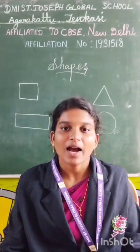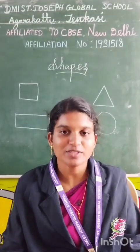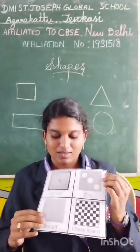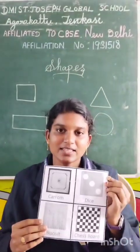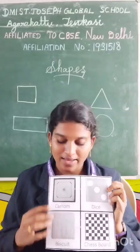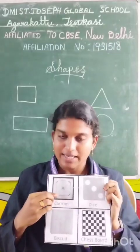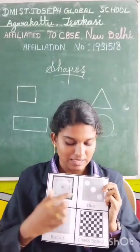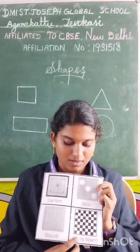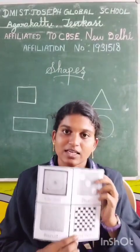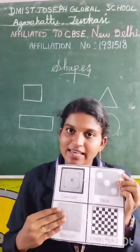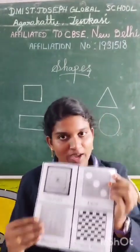I am going to show some examples of square shape. These are the examples of square shape. What are they? Carom, dice, biscuit, chessboard. These are the examples of square shape.